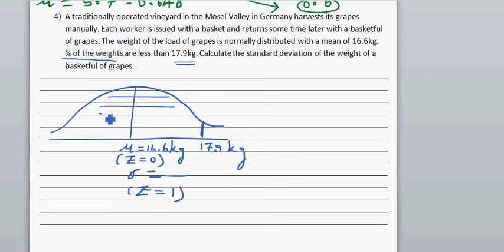This is three quarters. In terms of decimal, this is 0.75. You can say the same thing in a different way: the probability that the load of grapes is less than 17.9 kg is 0.75. Let me write it out. Probability that X is less than 17.9 is 0.75.